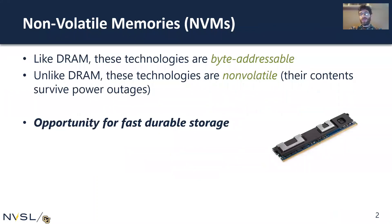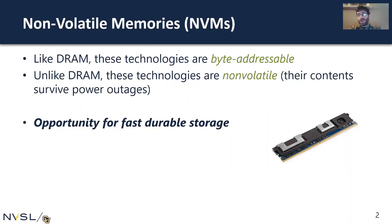The motivation for this work is the arrival of new non-volatile memory devices. Like DRAM, they're byte addressable and we can use them as main memory within a computer. They have performance characteristics on the order of DRAM — slower, but not incredibly slower. Unlike DRAM but like disk, these devices are non-volatile, meaning their contents will survive a power outage. These devices are a great opportunity for fast durable stores with fine-grained access to reasonably fast storage.